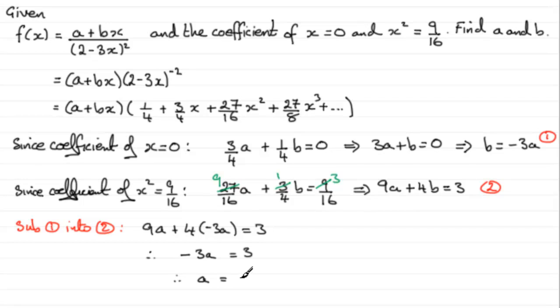Now substitute a = -1 back into equation 1. We get b = -3 times -1, so b = 3. There we go: a = -1 and b = 3.